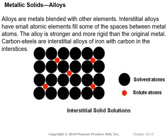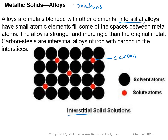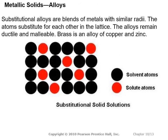Alloys are blends of metals — solutions where one metal is dissolved in another. There are two types. First, interstitial alloys, where a small solute atom (carbon is a favorite) is placed in between the larger atoms, making the metal more rigid and stronger. Second, substitutional alloys, where metals with similar radii substitute atoms for each other — brass is an example, an alloy of copper and zinc. These tend to remain ductile and malleable like the original metals.